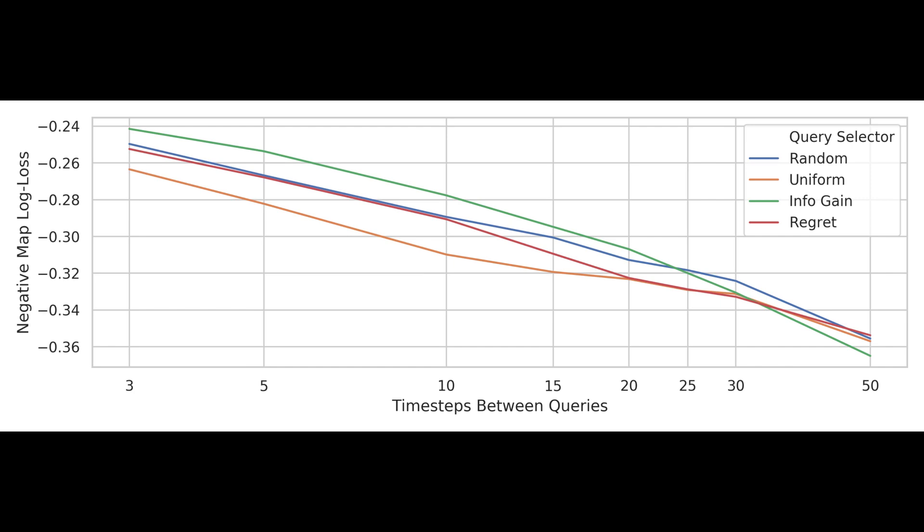Interestingly, however, the regret-based method does not do very well in terms of predicting the entire interest map. This is because it prioritizes asking for immediately useful information to choosing a good trajectory, rather than trying to build a generalizable reward model.